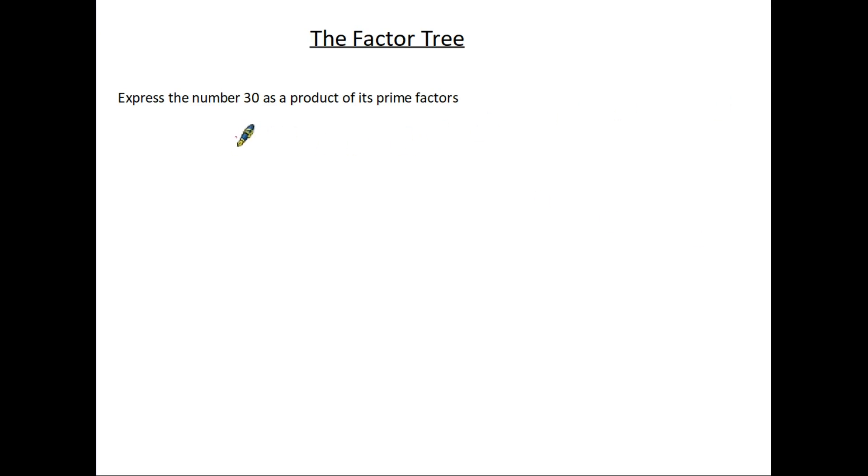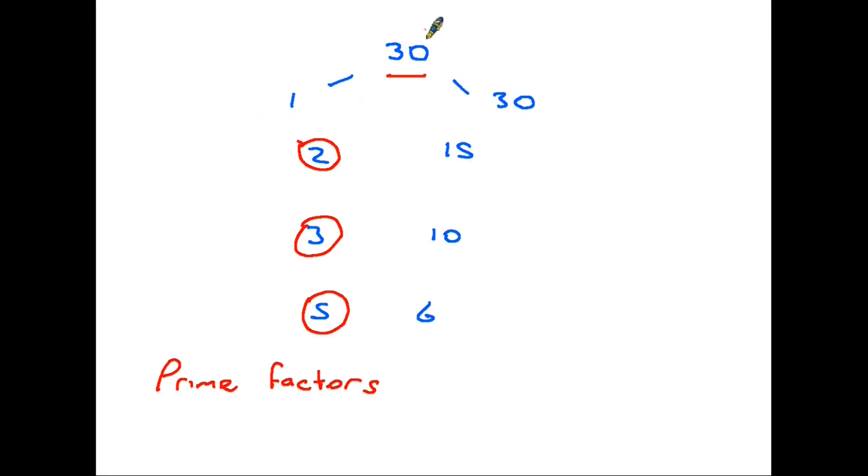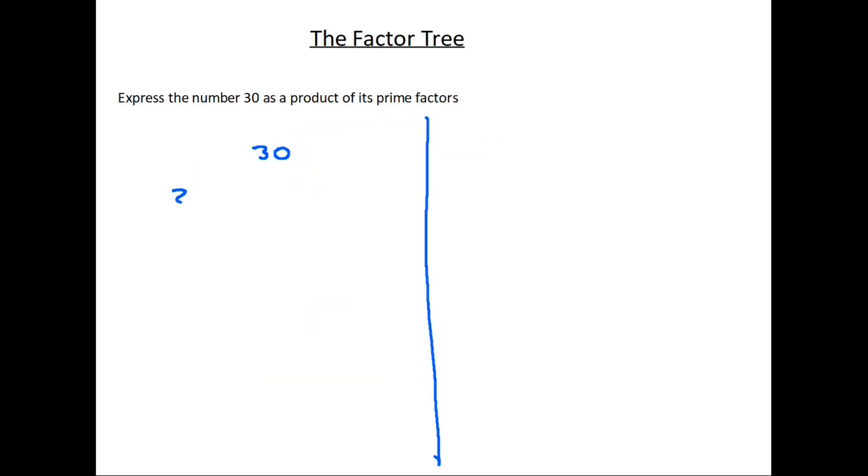Well we start as we did on previous pages with the number 30. Now I'm going to start on this side of the page because I want to show you how this works. The first thing that we do is we look for a pair of factors. You recall I said that factors often come in pairs and if we look back at 30 I'm not going to use 1 and 30, it gets us nowhere. So I'm going to use this second pair here. 2 times 15 is 30. So 2 and 15 are two of its factors. They are a pair.